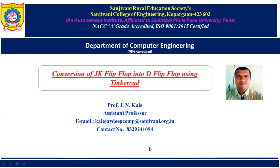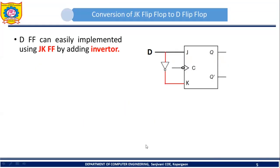Welcome everybody. In this session I am going to explain conversion of JK flip-flop into D flip-flop, and we will try to understand this conversion process practically with the help of Tinkercad. D flip-flop can easily be implemented using JK flip-flop just by adding an inverter between inputs J and K. If we put one inverter between input J and K, the resultant circuit is going to act as a D flip-flop.